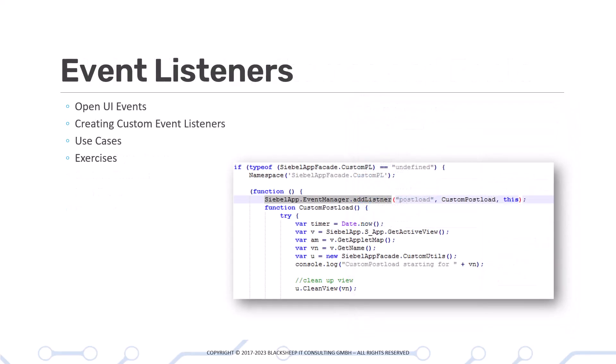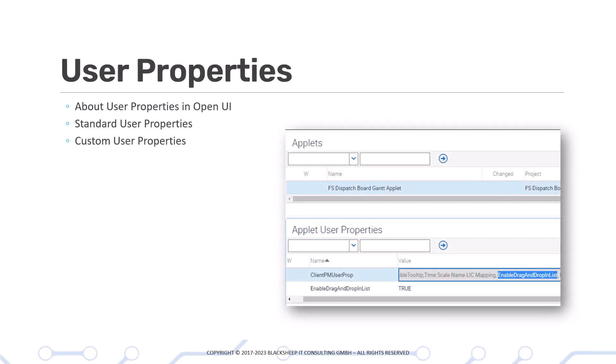The chapter on event listeners allows you to understand the post-load and pre-load event listeners and how to make best use of them in your Open UI customization. Then we discuss user properties which are defined in the repository but can drive your user experience customizations in the browser.